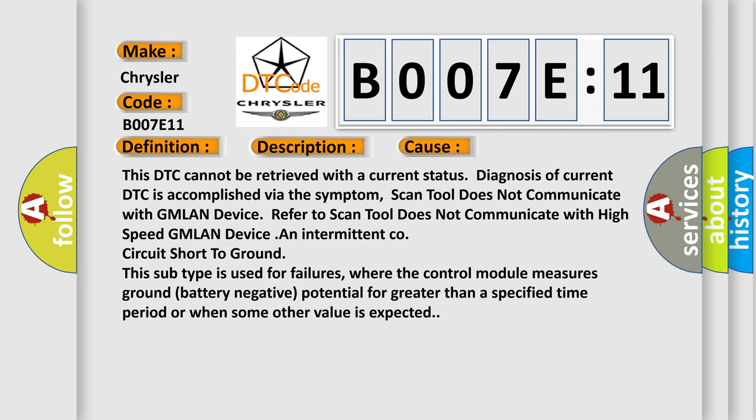An intermittent circuit short to ground. This subtype is used for failures where the control module measures ground (battery negative) potential for greater than a specified time period or when some other value is expected.